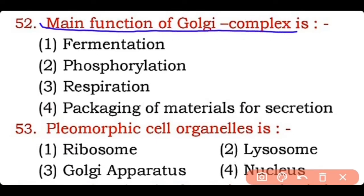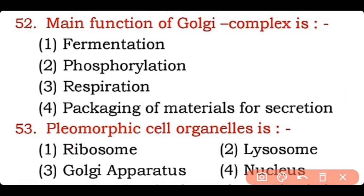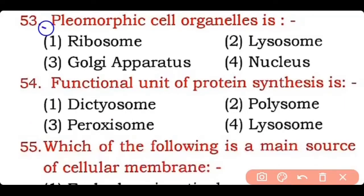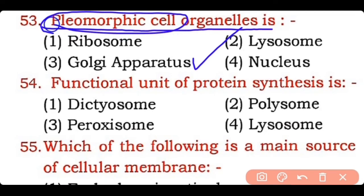Question 52: The main function of the Golgi complex is — fermentation, phosphorylation, respiration, or packing of material for secretion? Correct answer is option four — the main function of the Golgi complex is packaging of material for secretion in and outside the cell. Question 53: Which is a pleomorphic cell organelle — ribosome, lysosome, Golgi apparatus, or nucleus? Correct answer is option three — Golgi apparatus is a pleomorphic cell organelle, meaning it can change its shape according to its function.